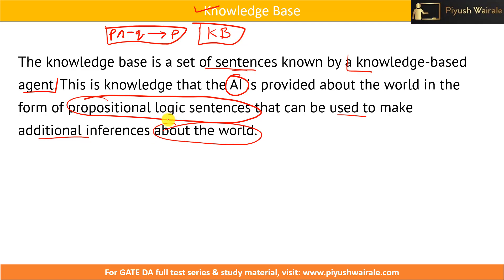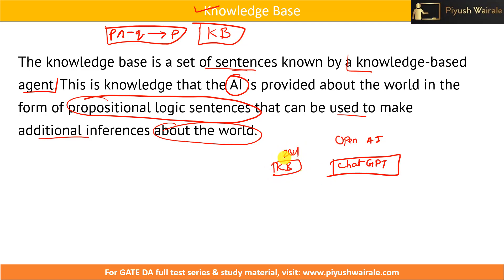I hope you understand what a knowledge base is. Based on the knowledge base only, AI will come to a particular conclusion — it can infer some information about a particular thing. If you take the example of OpenAI, that is ChatGPT, ChatGPT is also based on a knowledge base. It is trained up to data of 2021, so based on that data it gives us output: it reads the query, goes to the knowledge base, and fetches the output. But this is advanced architecture, so we are not going into detail — but overall, I hope you understand the concept of a knowledge base.